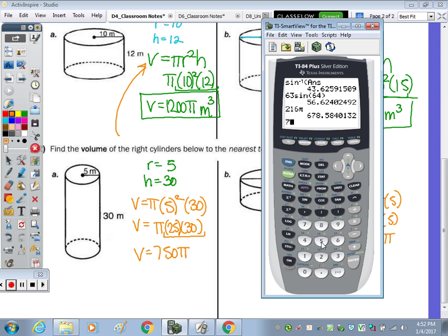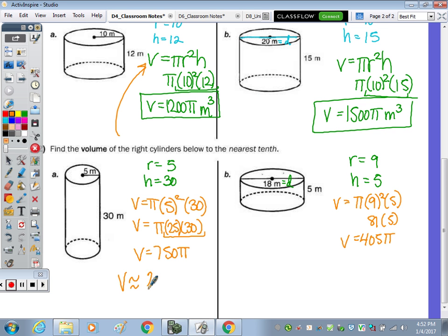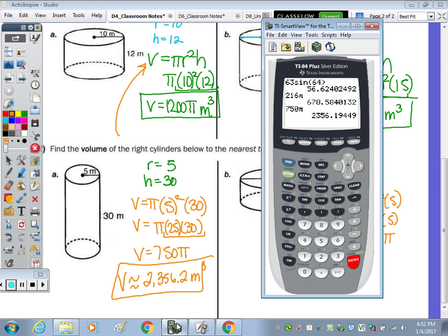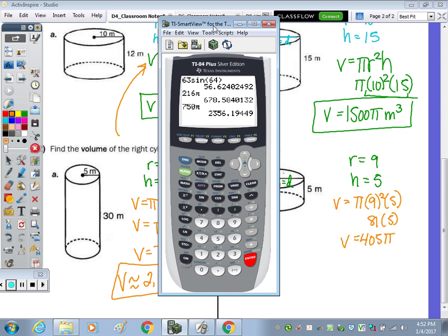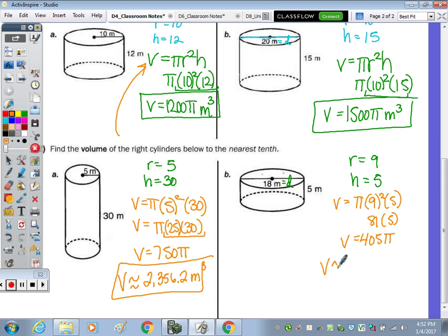We'll first type in 750π. Rounding to the nearest tenth, that would be 2,356.2. So volume is approximately 2,356.2 meters cubed. And then last we're going to type in the 405π, and we get 1,272 to the nearest tenth. That would be 0.3. So volume is approximately 1,272.3 cubic meters.